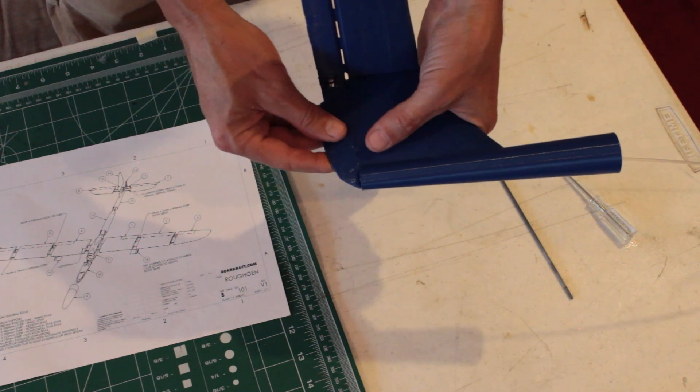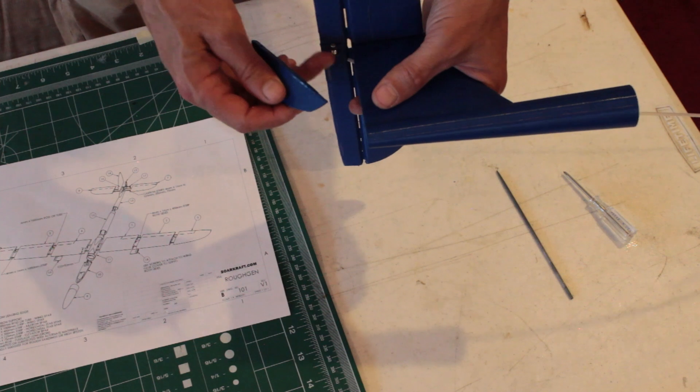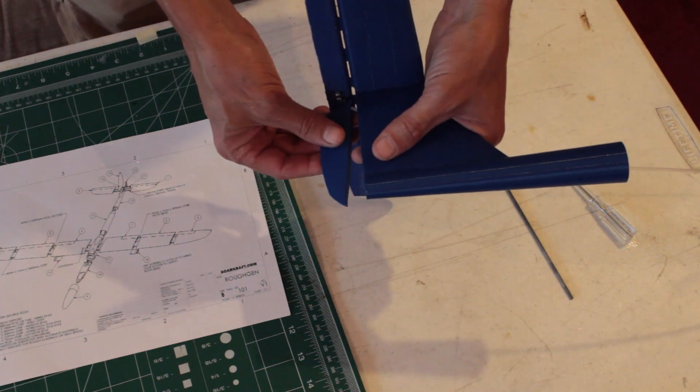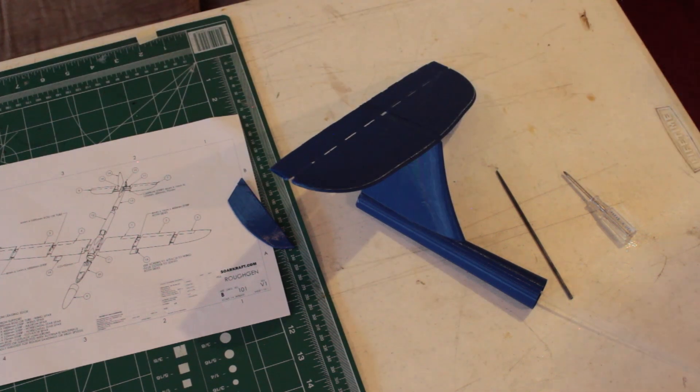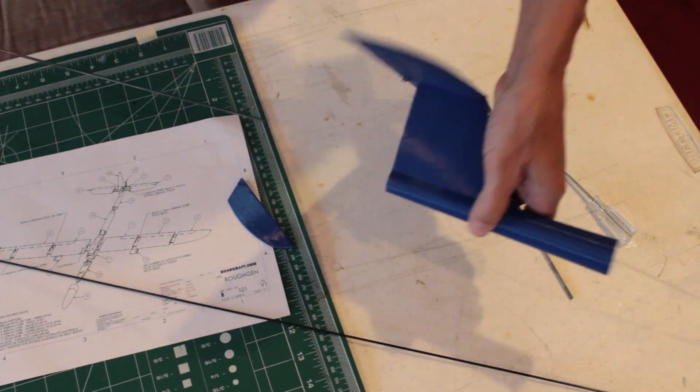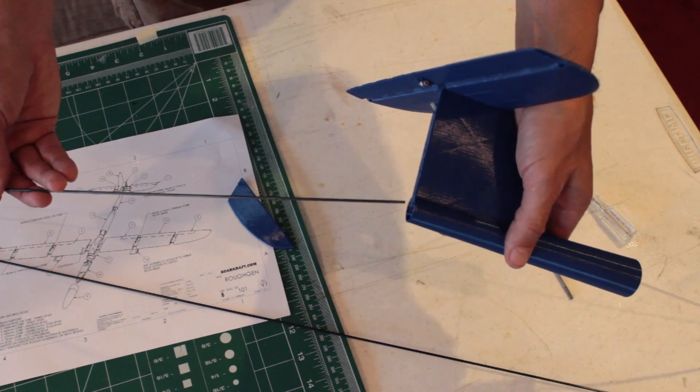Rest of the fuse put together - you need to do this kind of before you put the wire in or it's just a pain. The T-tail is also set up for carbon supports. You don't have to use them, but I highly recommend it.